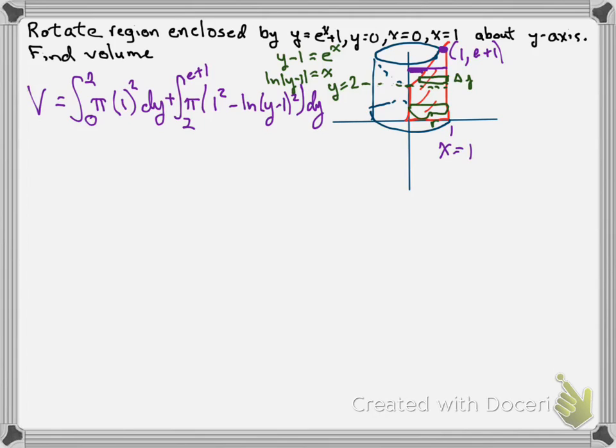So we now have our integral set up. With ln of y minus 1 quantity squared, we get something a little tricky because we can't calculate it with a standard antiderivative. The first integral is nice and simple, but the second one we would need to calculate with technology — you can use Wolfram Alpha, a graphing calculator, or any similar program. That's how we set up this integral.